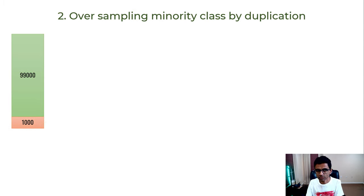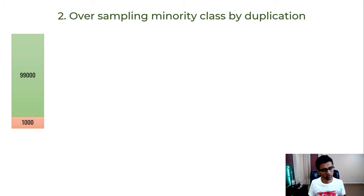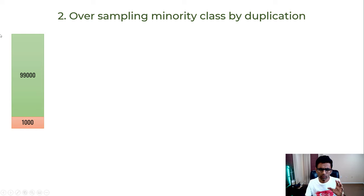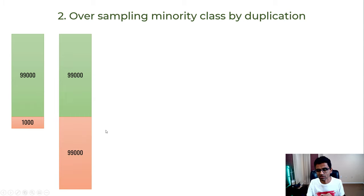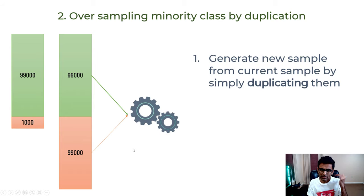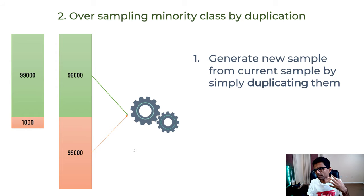The second option is to over-sample the minority class. One obvious technique is to duplicate the 1,000 fraud transactions 99 times to get 99,000 transactions — simple copying — and then train the model. While this works, there should be a better way.